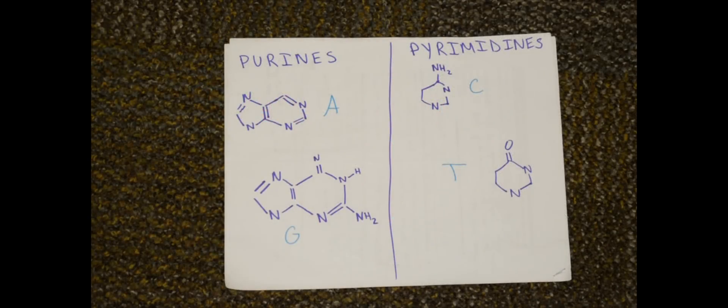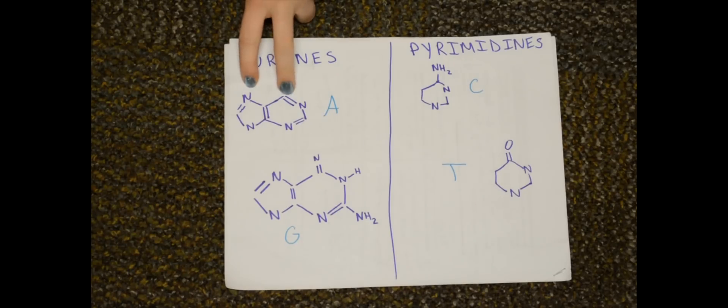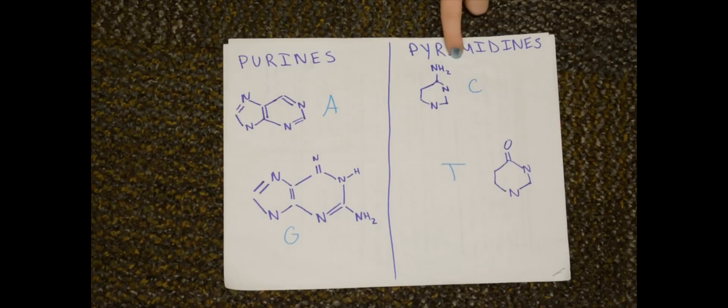The reason the nucleotides can only pair in these ways is because you have purines and pyrimidines. The purines are adenine and guanine, and they have two carbon rings. The pyrimidines are cytosine and thymine, and they have a single carbon ring.